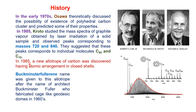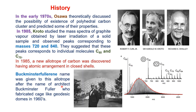So in 1985, a new allotrope of carbon was discovered having an atomic arrangement in a closed shell. It was given the name Buckminster Philorene, named after an architect Buckminster Fuller, who fabricated cage-like geodesic domes in 1960 that have interconnected elements. In philorenes, carbon is interconnected with another carbon atom, which is why this name was given.